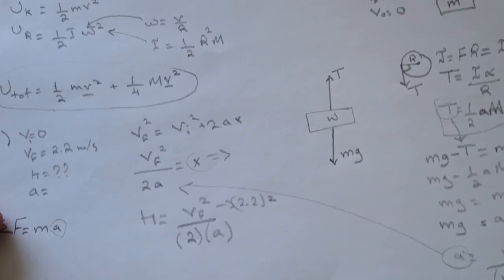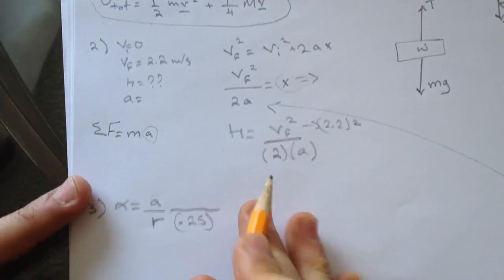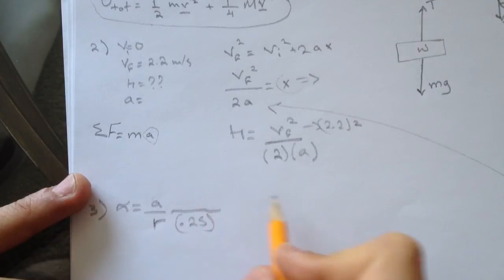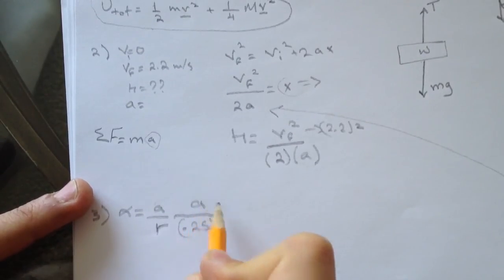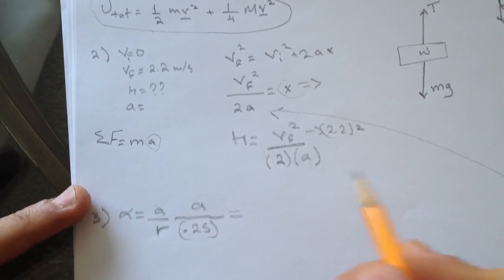The r is 0.25 divided by the a you got here, and then the value of a you got gives you the answer. Good luck and bye.